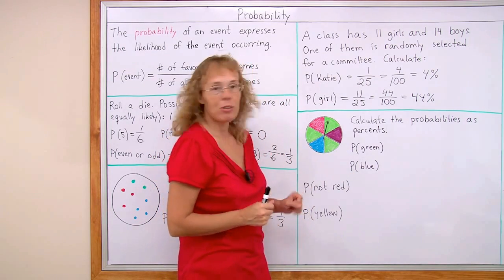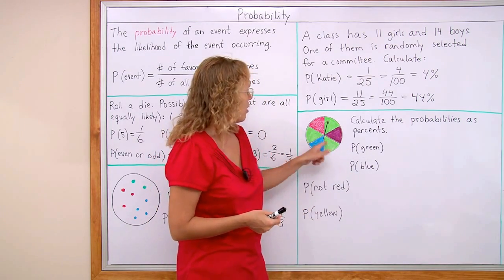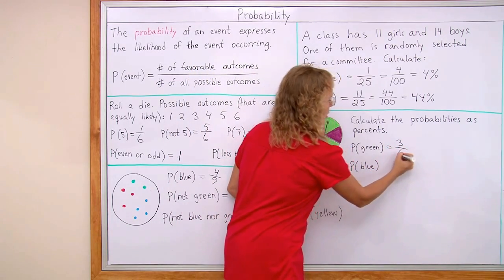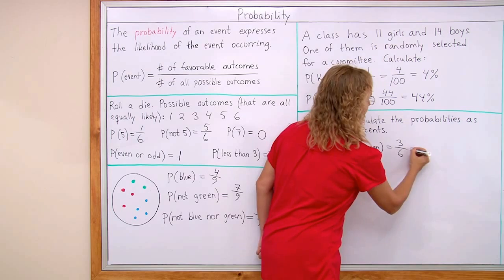The probability of getting green. Okay? We just count how many favorable outcomes. Three and then six in total. This is of course equal to one half. So it is fifty percent.